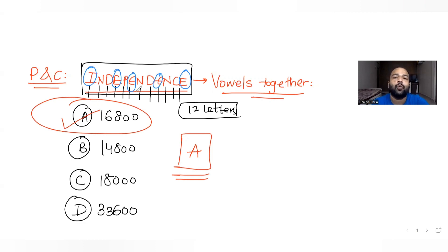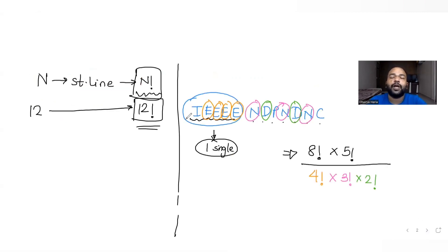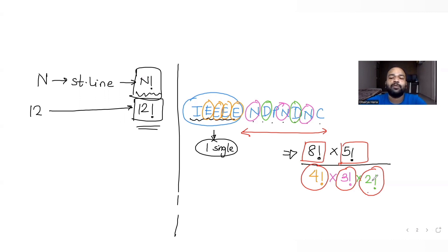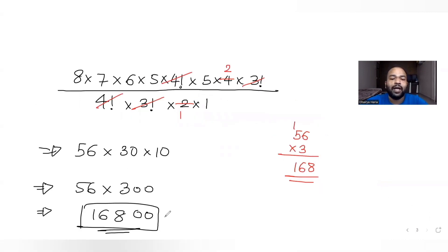To summarize the method: pick out the vowels and put them in a single group, treating them as one letter. Count the remaining letters — here seven — plus the group makes eight. Arrange in 8 factorial ways, multiply by 5 factorial for the vowels within the group, then divide by 4 factorial (E repeats 4 times), 3 factorial (N repeats 3 times), and 2 factorial (D repeats 2 times). Calculate to get 16,800.